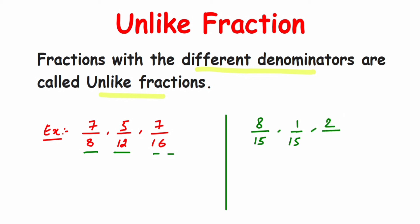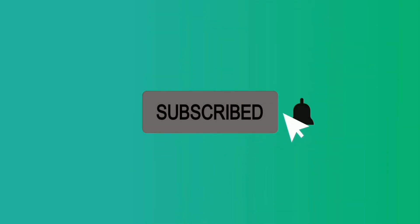Let me take one more set. Suppose I have 2/3 — now what would you call this pair? The first two are like fractions, but if you take all three together, they are called unlike fractions because the third one has a different denominator. That's it — I hope it's clear. If you have any questions or doubts, you can drop a comment below. Thank you so much for watching.